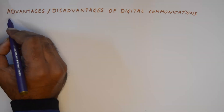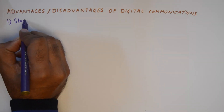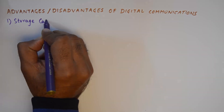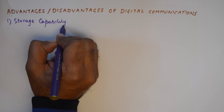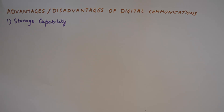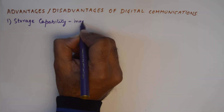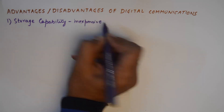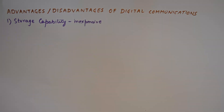The first advantage of a digital communication system is the storage capability. It is super easy to store digital data, both at the receiver and transmitter, and in greater quantities. The storing capability of digital communication systems is really inexpensive, and every day the size of memory is being shrunk while the capacity of memories is becoming manifold.